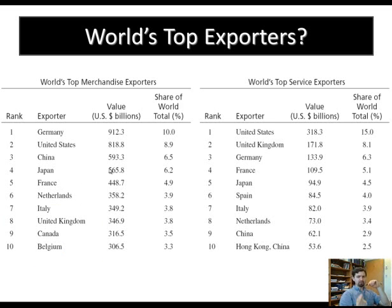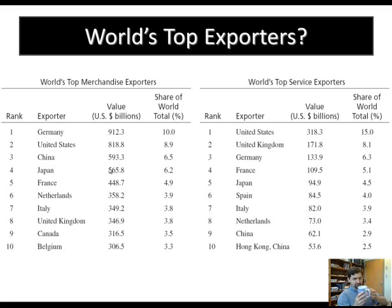Yes, China sells many units of products, from matchsticks to cars, but the United States sells things that are much more expensive. One Boeing airplane is probably worth a thousand cars, and probably ten million smaller items like a cup made in China. You need to make an enormous number of cheap items to equal the value of, say, a Caterpillar bulldozer or a Boeing airplane.